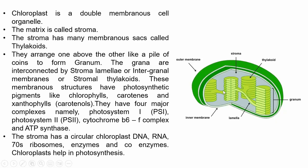These membranous structures have photosynthetic pigments such as chlorophylls, carotenes, and xanthophylls, and major complexes like photosystem I, photosystem II, cytochrome B6F complex, and ATP synthase that help in photosynthesis. Just like mitochondria, chloroplast also has its own circular DNA, RNA, 70S ribosomes, enzymes, and coenzymes. The main function of the chloroplast is to carry out photosynthesis.